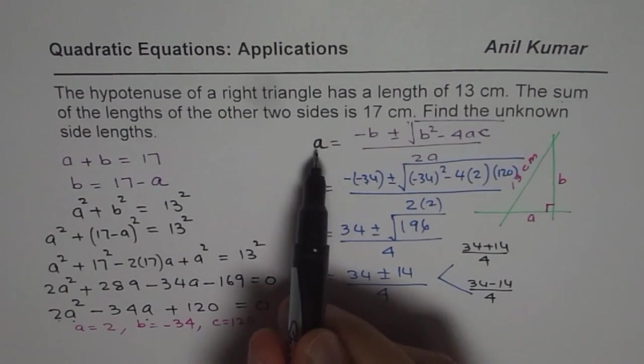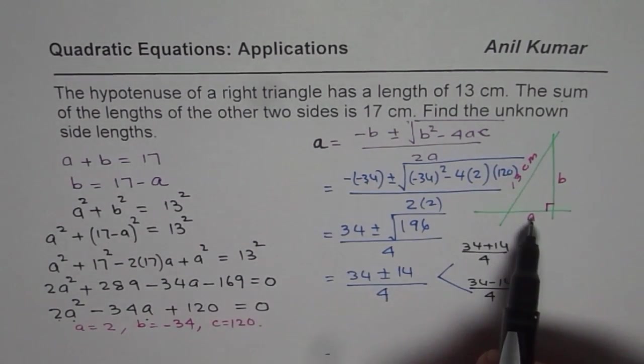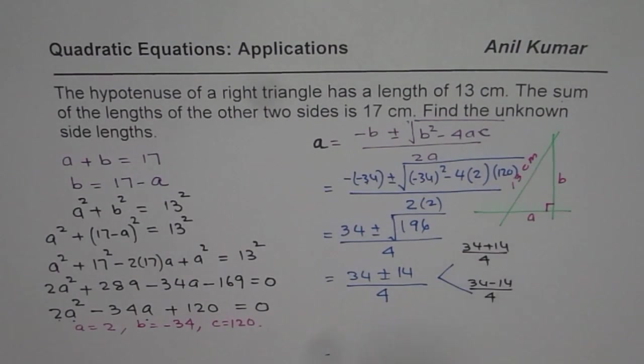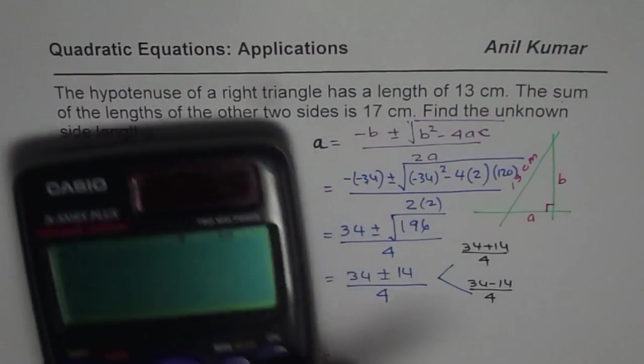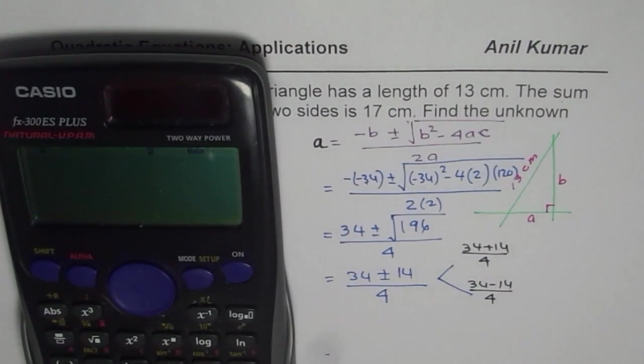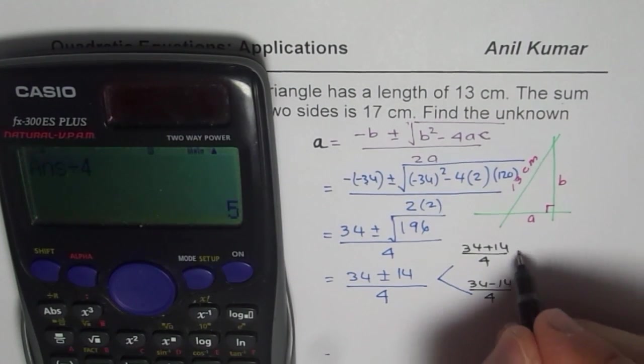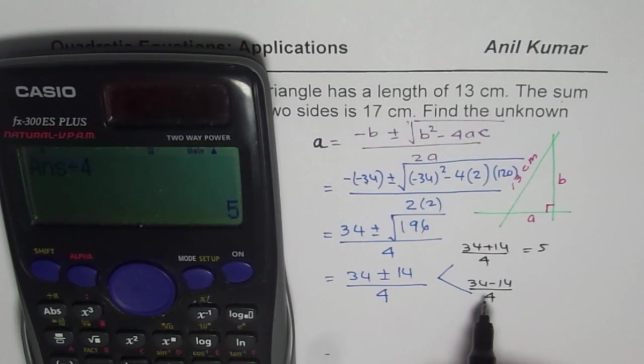We are trying to find the length of side A, which has to be less than the hypotenuse. Remember that part. So let's calculate what do we get. So 34 minus 14 equals to divided by 4 equals to 5. So we get 5 here.